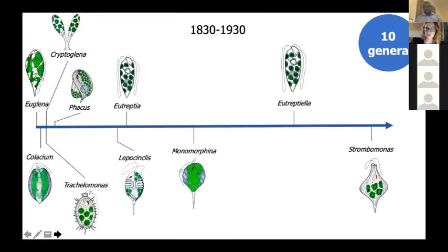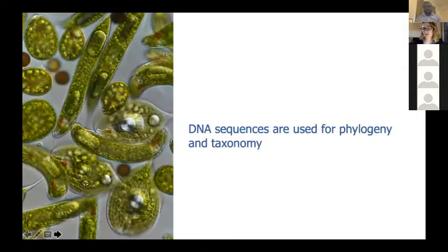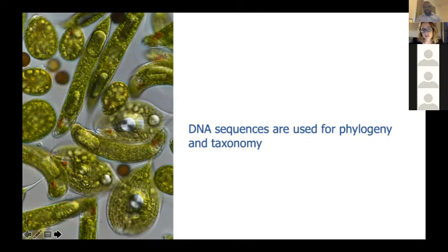Things started to change at the end of the 20th century, when the first sequence of Euglena was obtained — an 18S sequence from Euglena gracilis in 1996. From that moment, we started to accumulate DNA sequences, mainly 18S but later also other molecular markers. Those were used for phylogenies and for taxonomy, and that resulted in quite many changes.